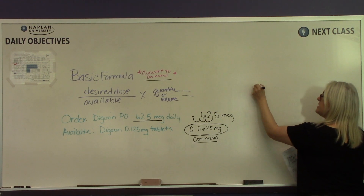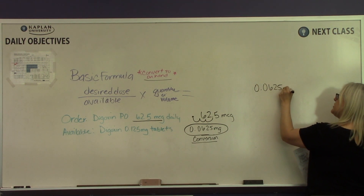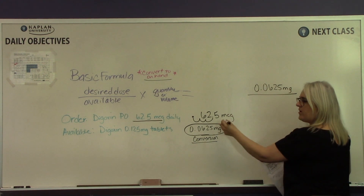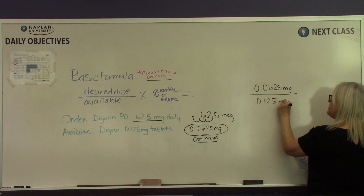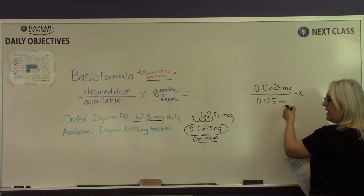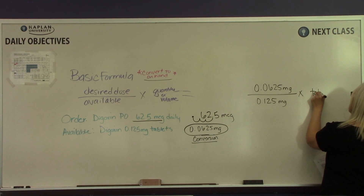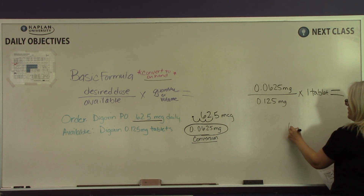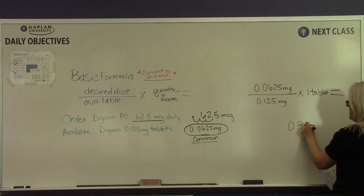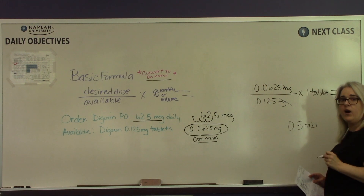Our desired dose is 0.0625 milligrams over our available dose of 0.125 milligrams, multiplied by the quantity, which is one tablet. After you do your math, you will come up with 0.5 tablets. We know the answer is in tablets because the milligrams cancel each other out.